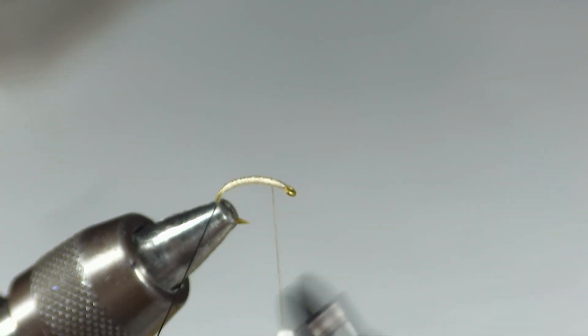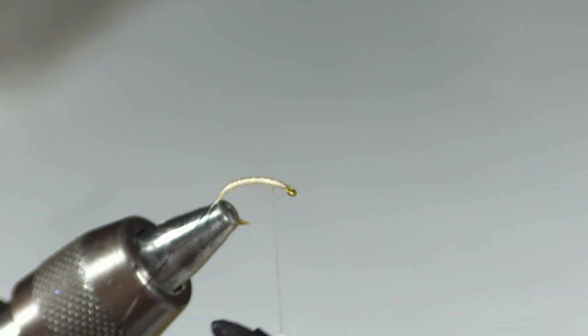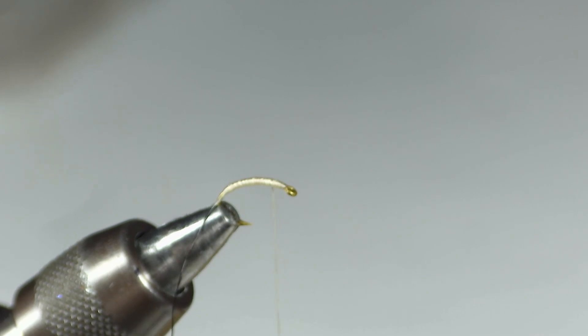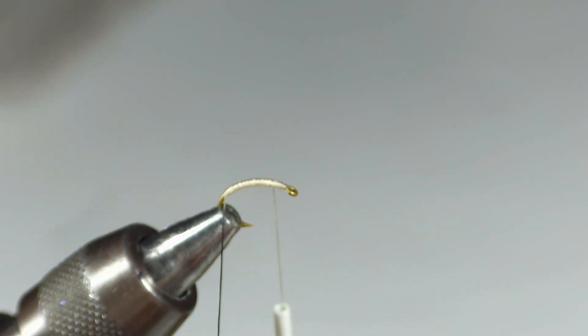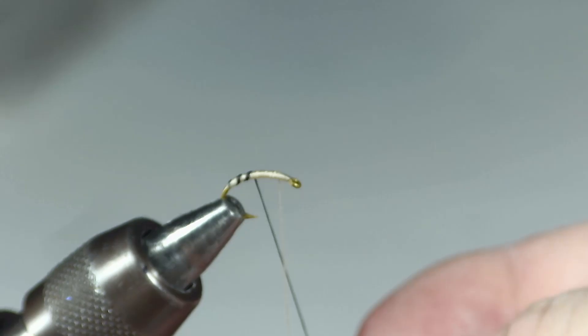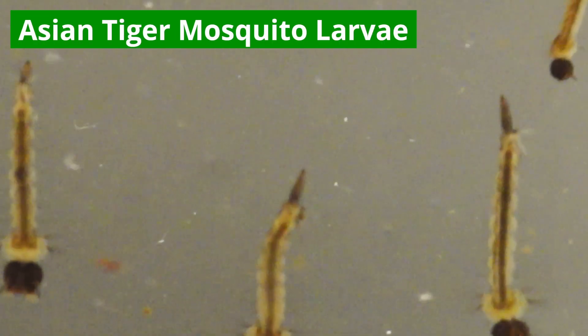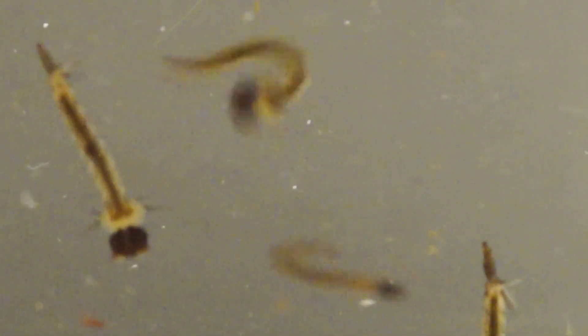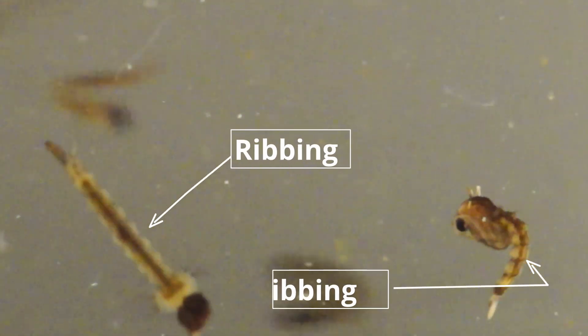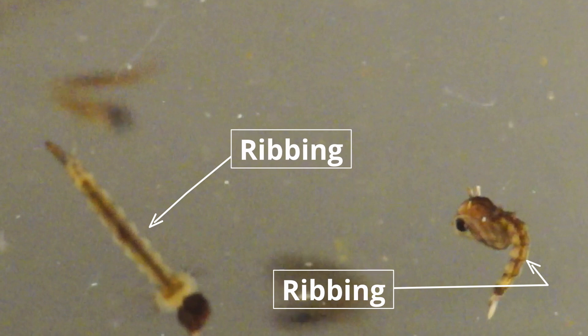We put some black marker on the light thread so we have a dark color to use. You need to let this dry for just a minute, otherwise it will smudge.